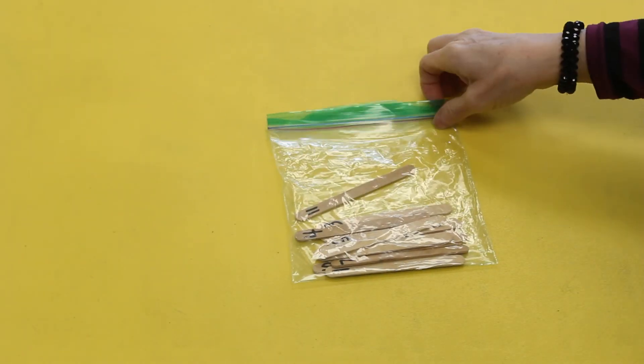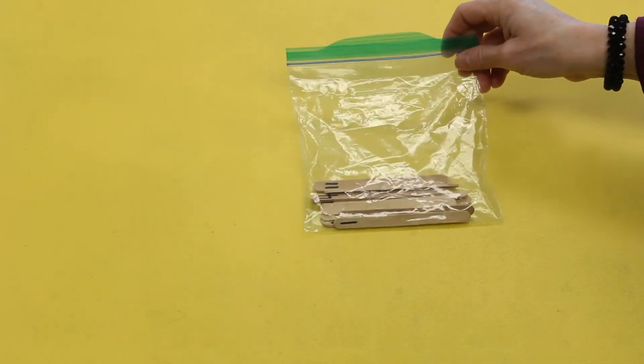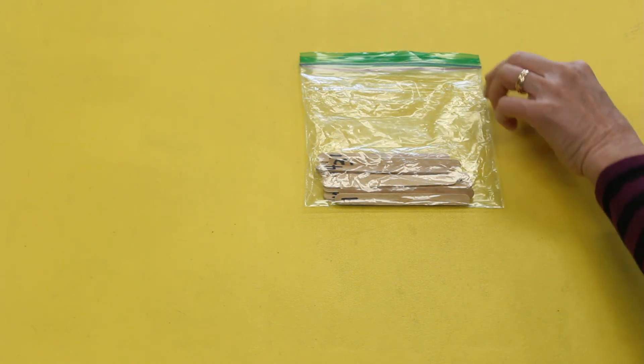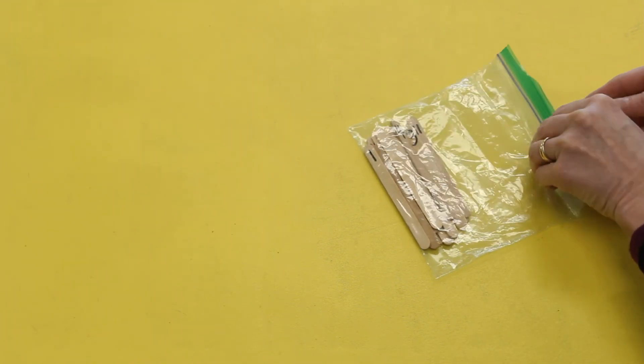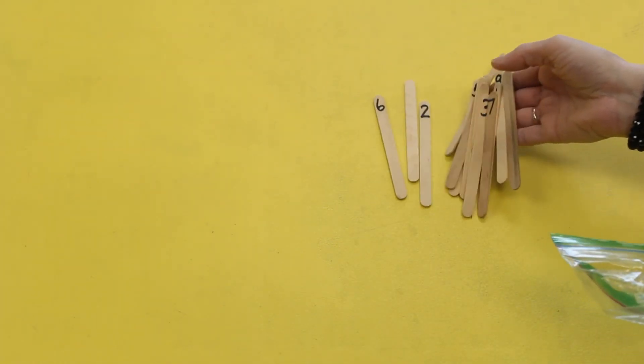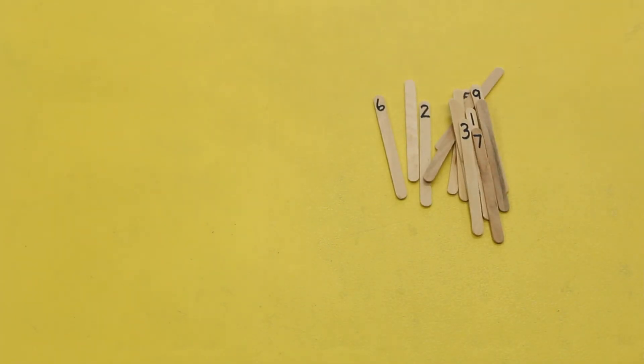Pull your little bag out of the thrilling Thursday pocket. In that bag there are popsicle sticks, and each popsicle stick has a numeral at the top. Let's pull those sticks out of your bag and set them there in front of you on the table. Your job is to put your popsicle sticks in order starting with one.